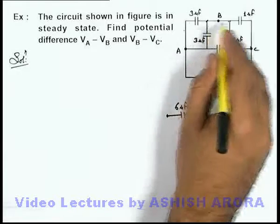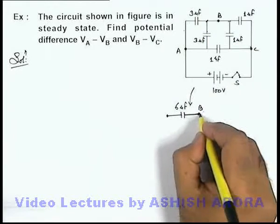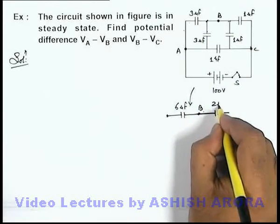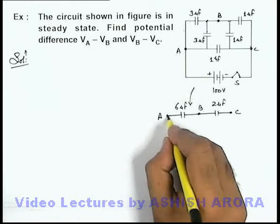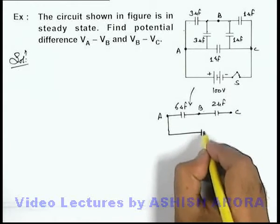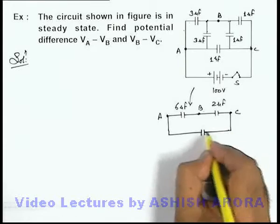And beyond terminal B, it is 1 plus 1, it is 2 microfarad. And here are terminals C and A, where another capacitor of 1 microfarad is also connected.